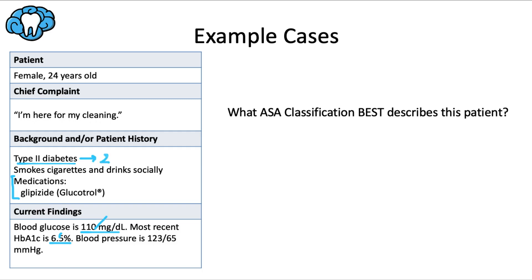So we'd go with ASA 2 for this patient's diabetes status. They smoke cigarettes and drink socially — both also point toward ASA 2. Their blood pressure is 123/65; there's no mention of hypertension in the medical history. It is elevated in AHA categories, but not over the 140/90 threshold, so this is likely just an anxious patient. With all factors pointing to ASA 2, this patient is classified as ASA 2.